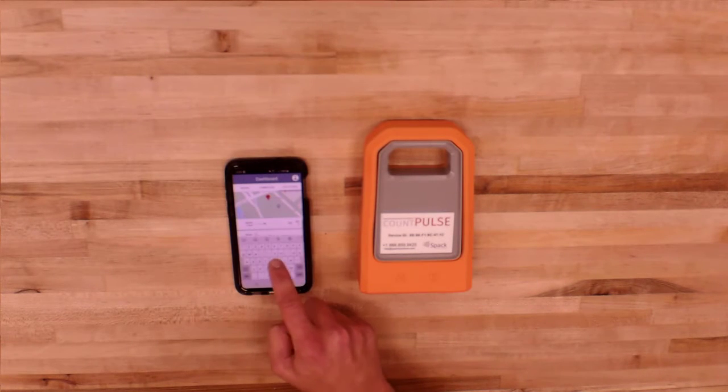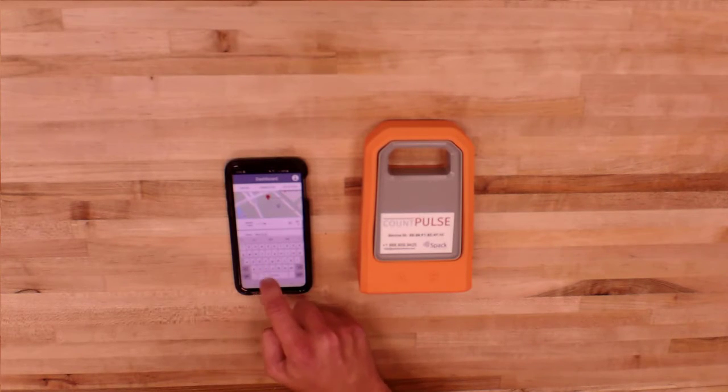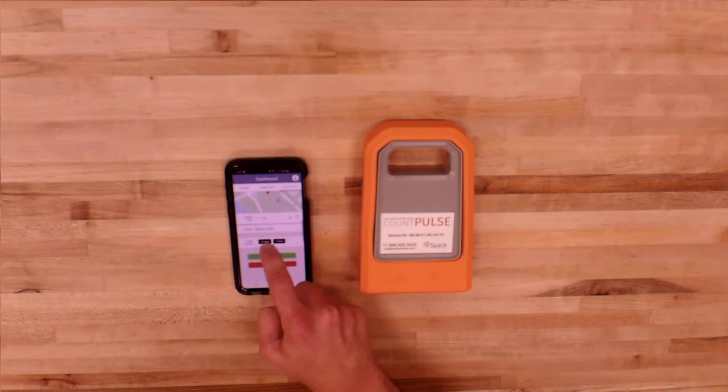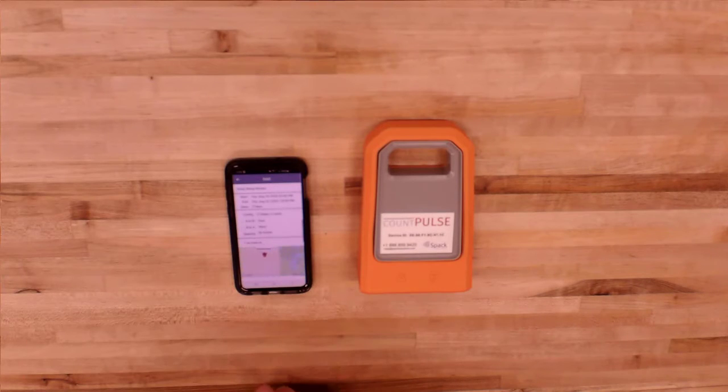There is also a notes section where you can enter any notes you'd like to have attached to your study. You will also have the ability to set the visibility of your study on the Count Hub to private so that only your account can access the study, or public so that anyone can access that data. This can be changed after the study is uploaded to the Count Hub.